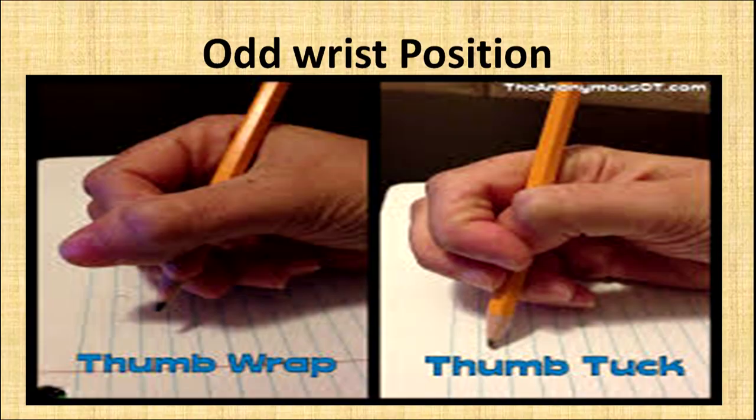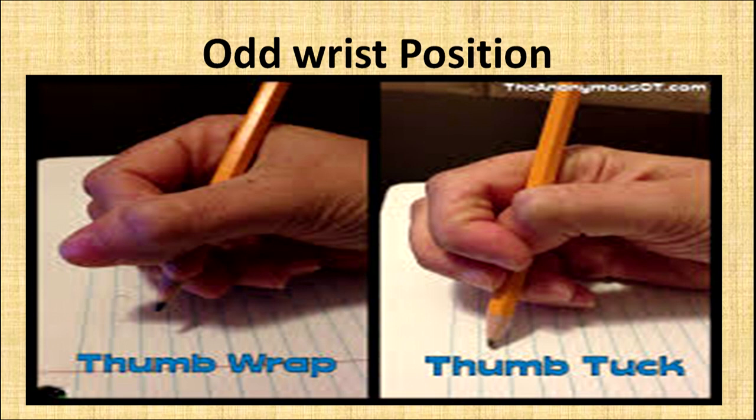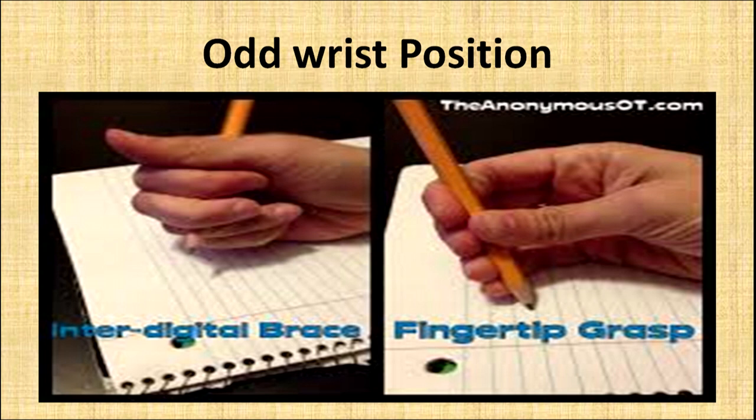The next indicator is odd wrist position. In our daily routine, we observe students holding pencils in different ways. At times a child holds the pencil with thumb wrap, or tucked between fingers. The sample pictures show various grips — inter-digital brace, fingertip grasp, hook shape, and many other varieties of holding the pen or pencil. These unusual grips are indicators of a writing difficulty.